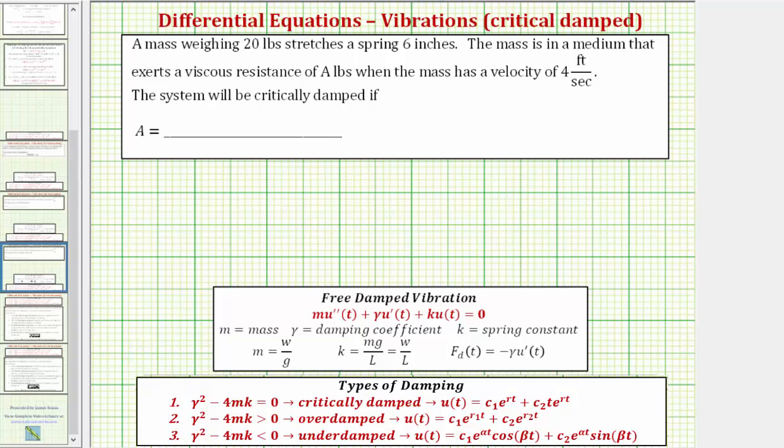Let's first list all the given information. We know the mass weighs 20 pounds, so w equals 20 pounds. The spring is stretched six inches, so l equals six inches. But we need this to be in feet because the velocity is in feet per second. Six inches is equal to half a foot.